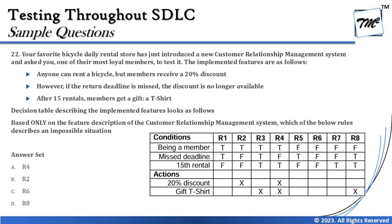R4 says: you are a member (true), you never missed a deadline (false), and you completed the 15th rental (true). That means you are eligible for a 20% discount and also get a t-shirt — that's very practical. R2 says: member (true), missed deadline (false), not yet completed 15th rental (false) — so you only get the 20% discount. That's also practical.